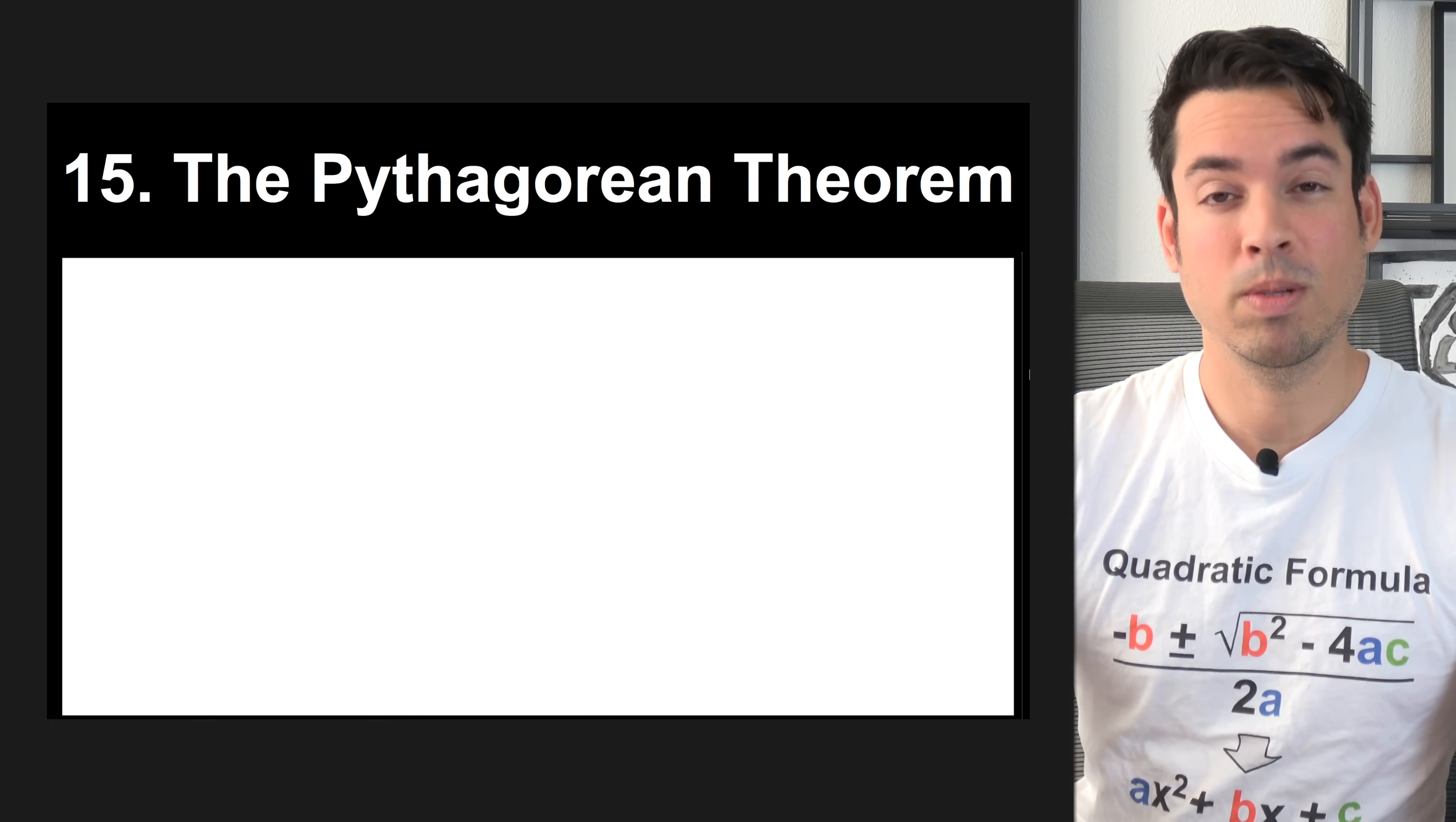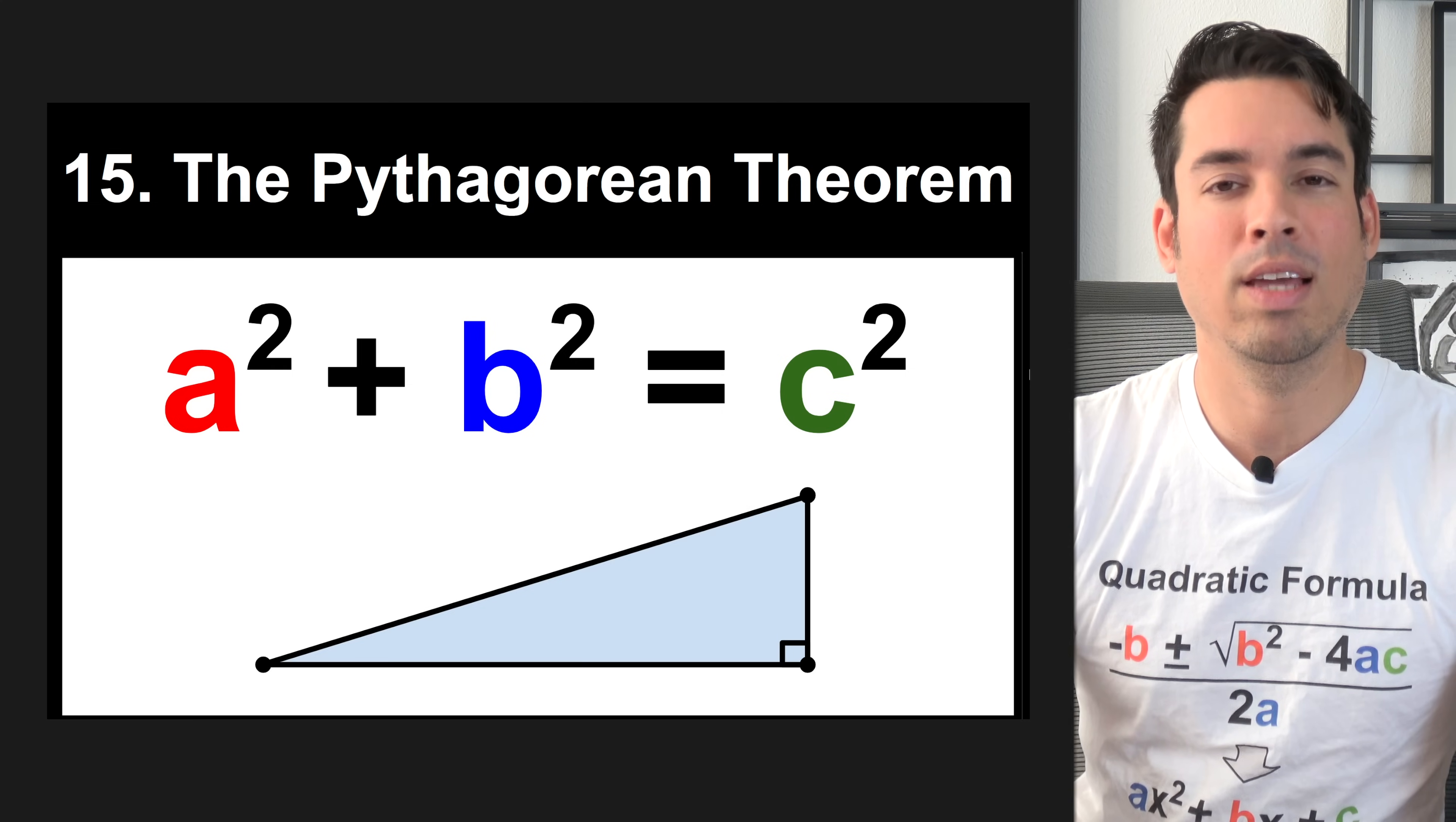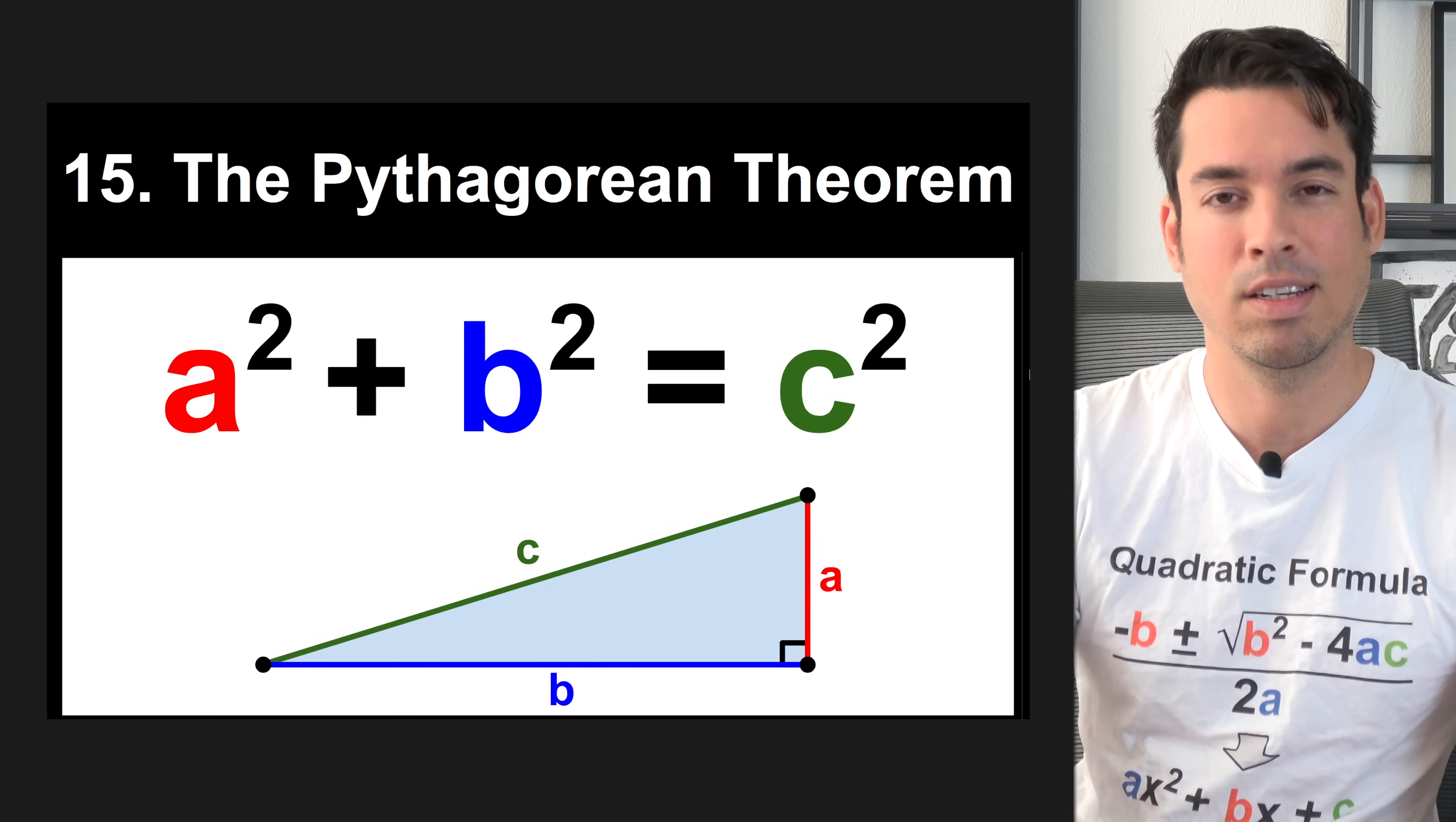Next, we have one of the most famous formulas in math, the Pythagorean theorem, which is a squared plus b squared equals c squared. Just to put it in context, here is a triangle. Note that a and b are the legs. They are the pieces that form the right angle. And c is the hypotenuse, which is the longest side opposite the 90 degree angle.